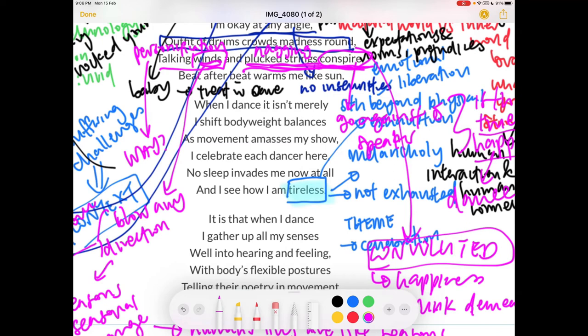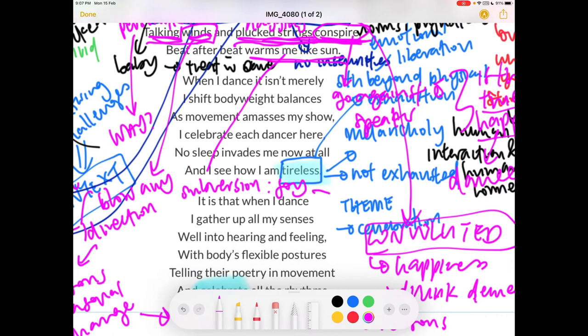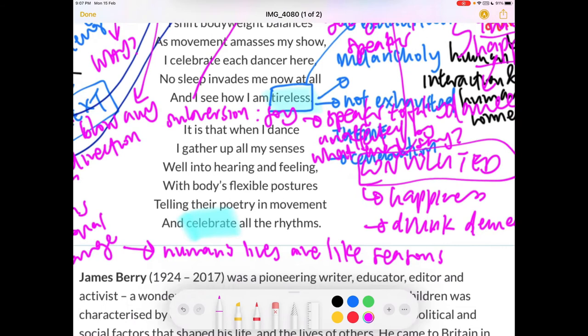Beat after beat warms me like sun. Here you realize that after I've shared my interpretation of the line above, warming me like sun would be somewhat a subversion. Despite all these conspirations, talking, these kind of gossiping stuff, all these words do not really affect the speaker because the speaker is warmed like sun. There's this feeling of joy. So does it truly mean that the speaker is totally unaffected by what they say, or is it just a pretense?